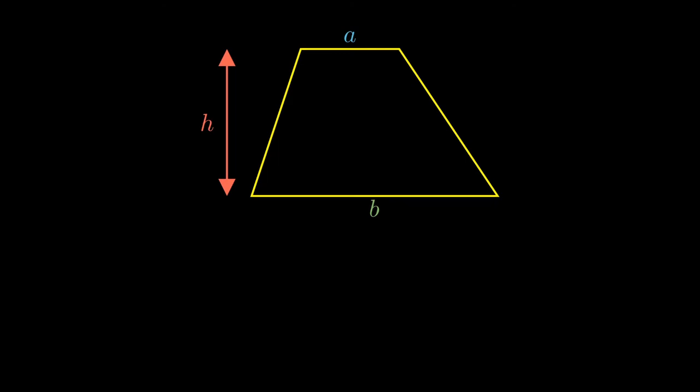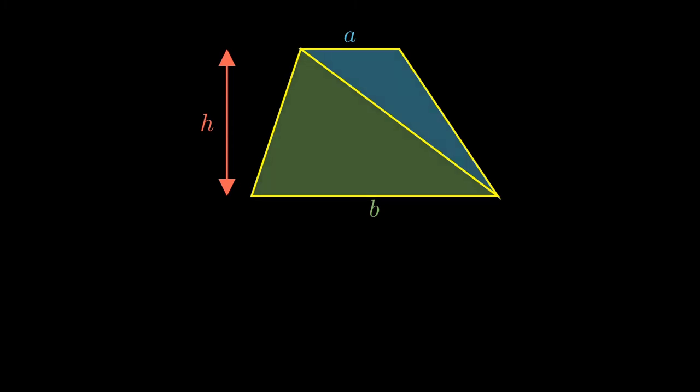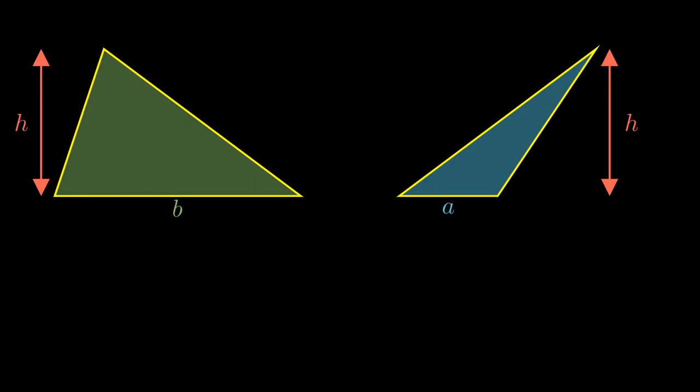Now, with this trapezium, the way we're going to work out its area is by cutting it up into two triangles, as I just talked about. And if we just for the moment split up these triangles, we can see that the area of the green one must be half times base times height, which is half times B times H, while the area of the blue triangle is half times A times H, the base of that being only A.